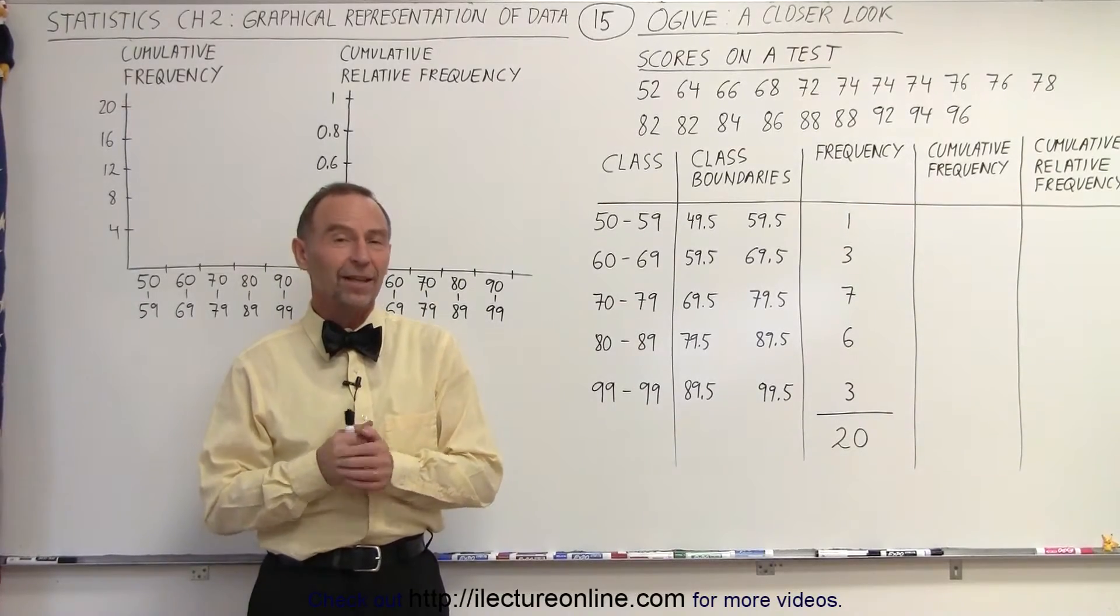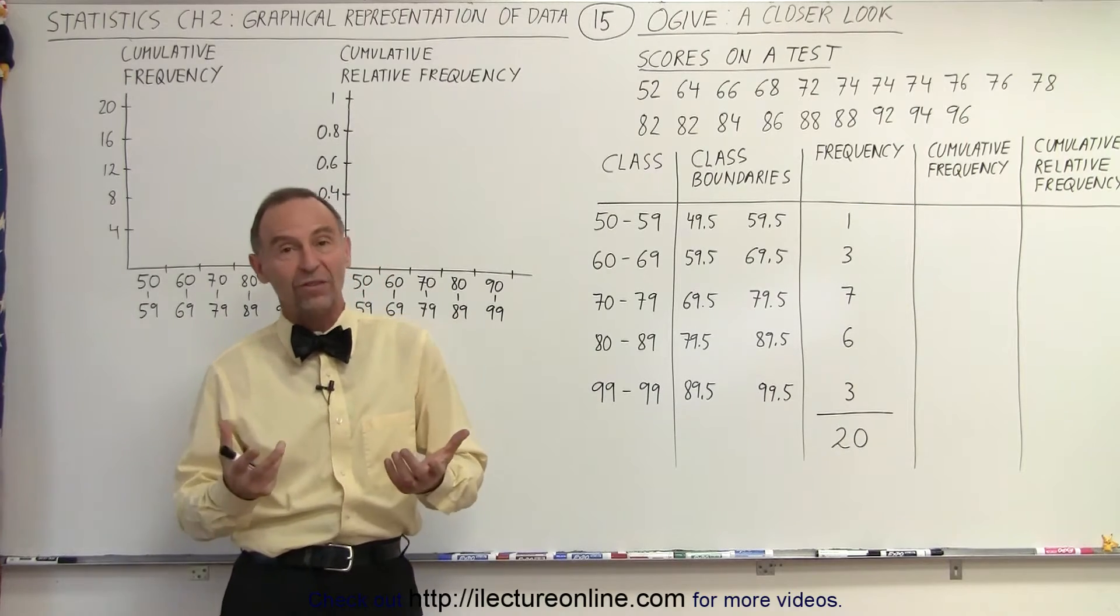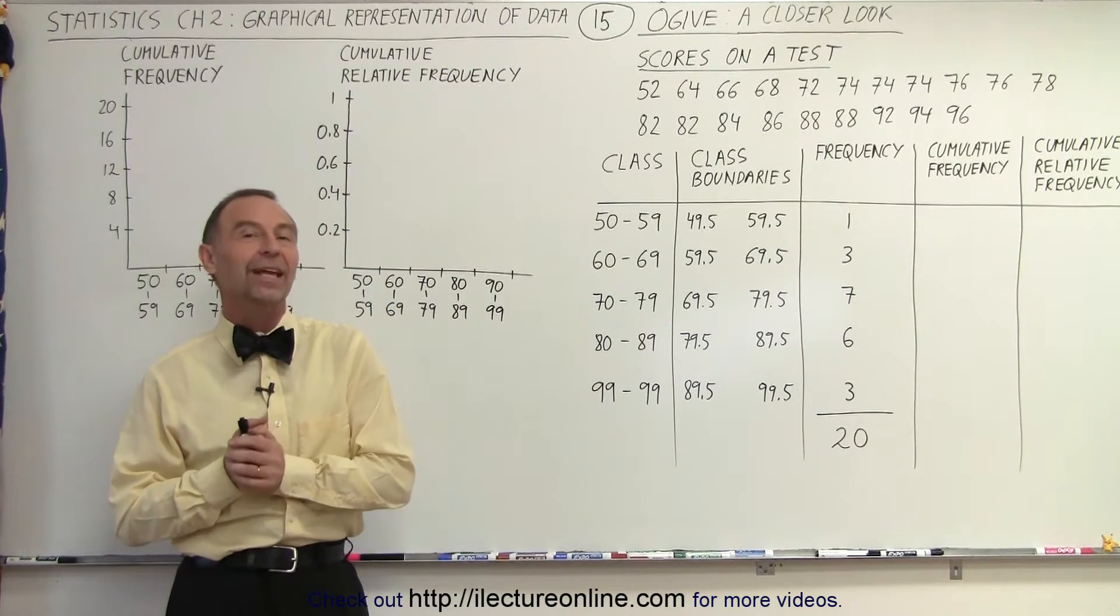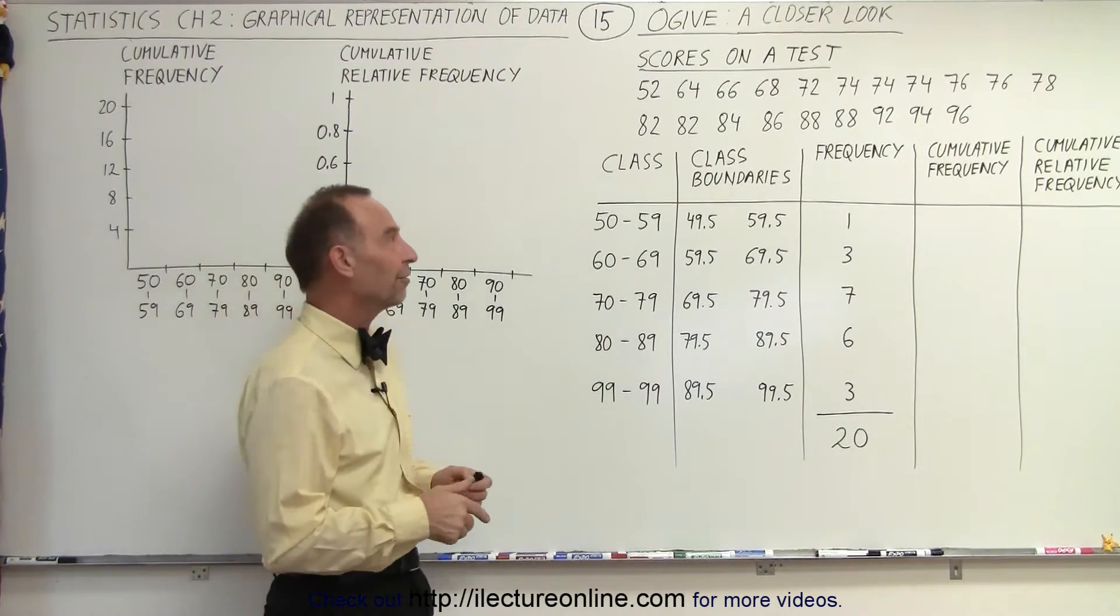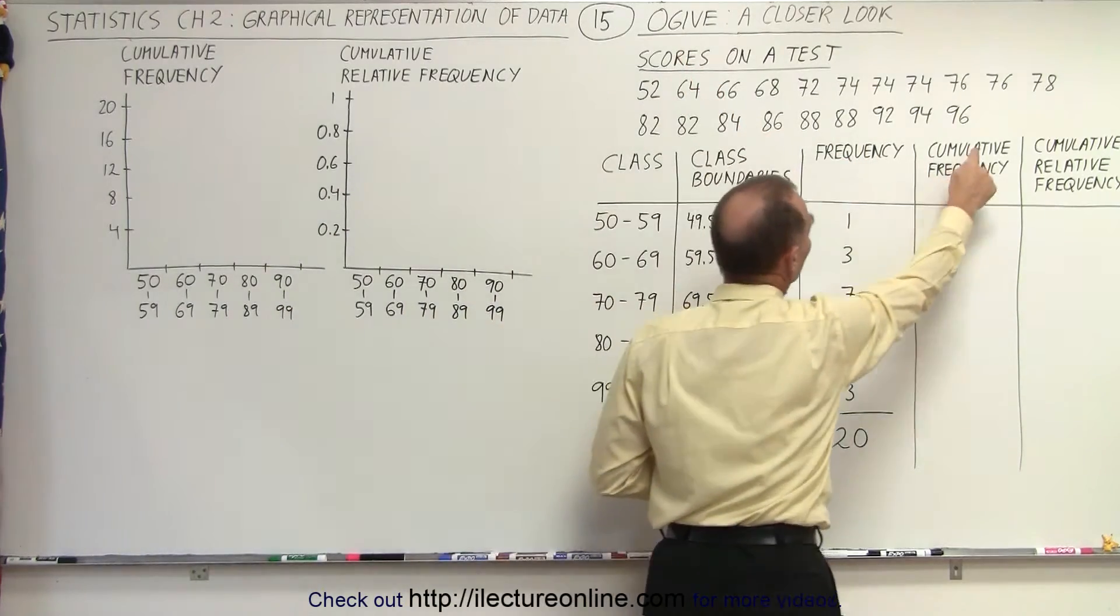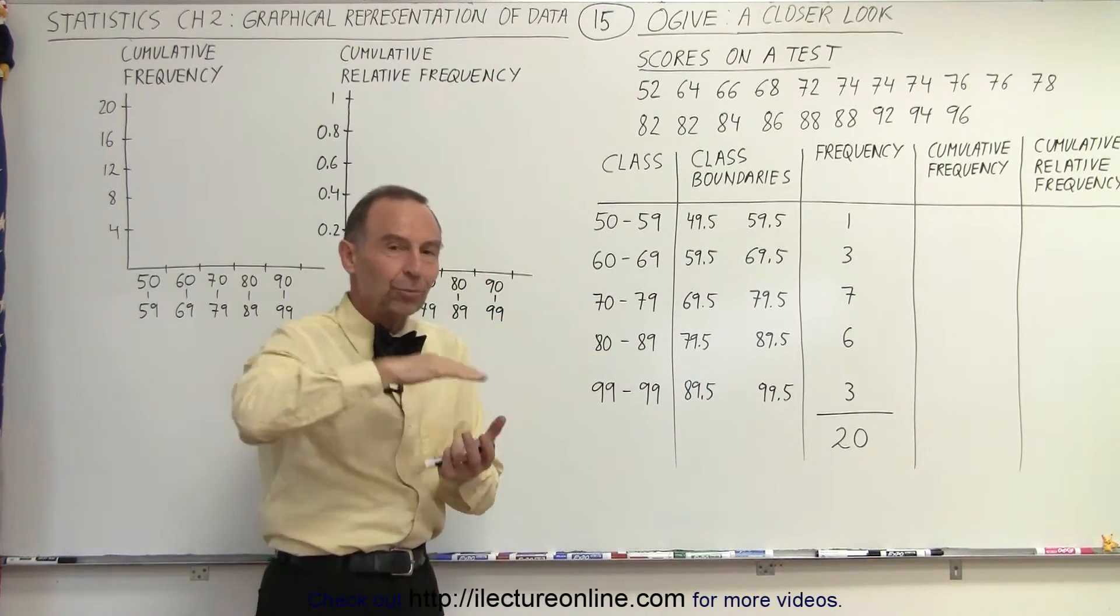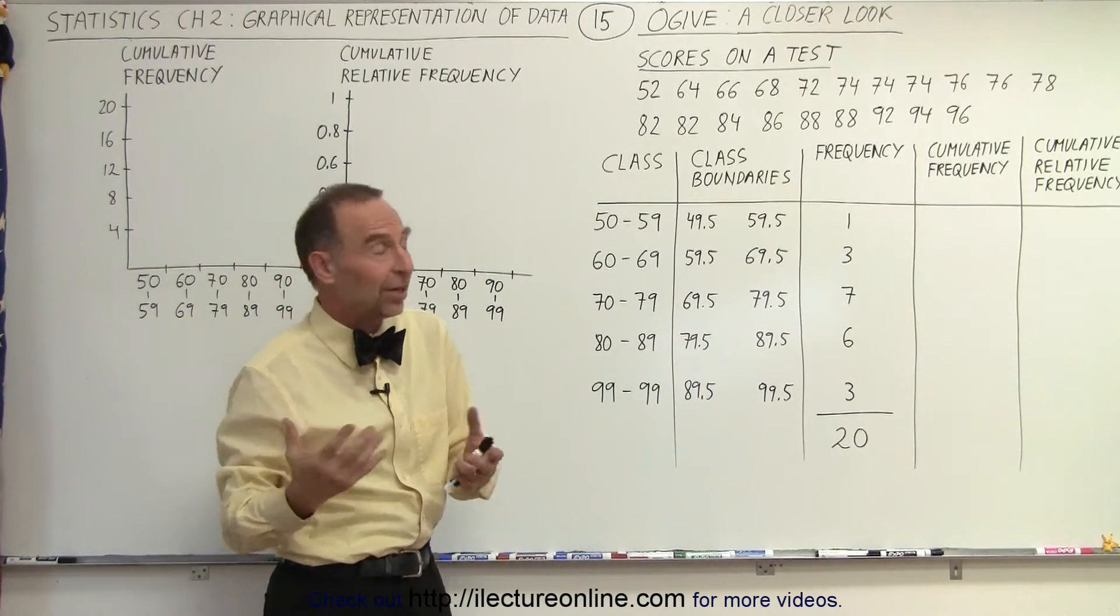Welcome to ElectronLine. Now let's take a closer look at an Ogive because there's actually two ways in which we can represent the data on an Ogive graph. Notice that the keyword for Ogive means cumulative. We're accumulating the data. It adds up to the whole thing. Now it can be represented in two ways.